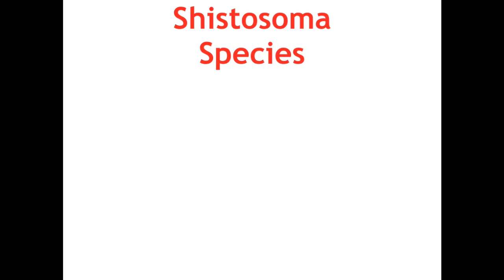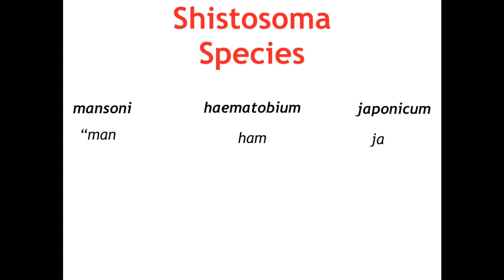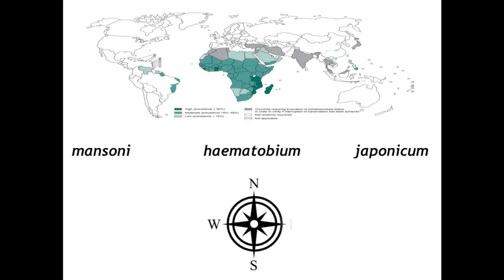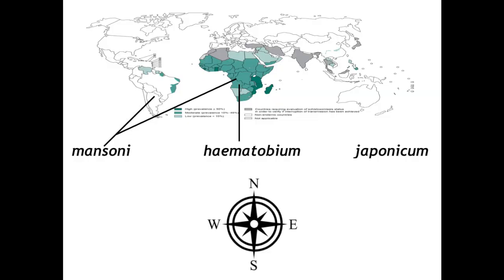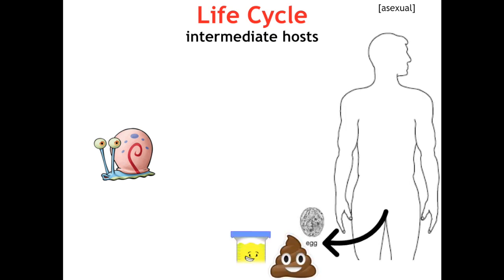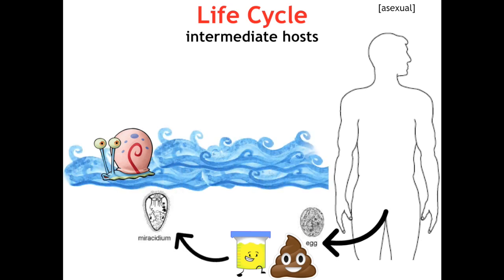The three species are Schistosoma mansoni, haematobium, and japonicum — remember 'Man Ham Japan.' The epidemiology runs west to east: mansoni is found in South America and Africa; haematobium is endemic to Africa, which has the highest prevalence of any continent with almost every fresh body of water contaminated; and japonicum is from Japan. Like all trematodes, the intermediate host is a freshwater snail, and the cycle begins as eggs shed in urine or stool hatch upon contact with fresh water and seek the snail host.